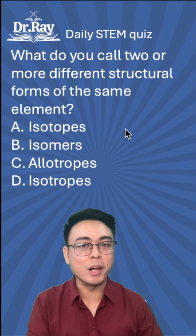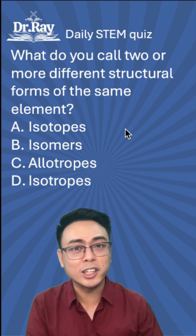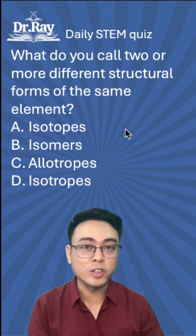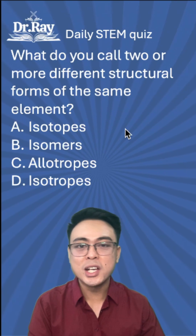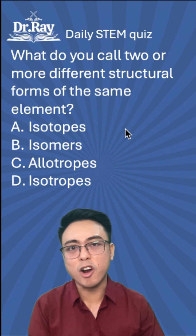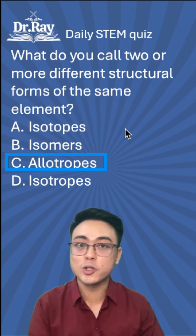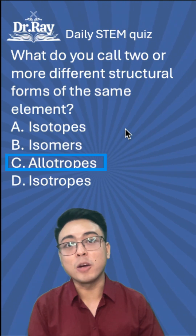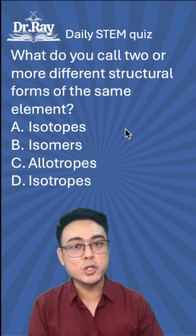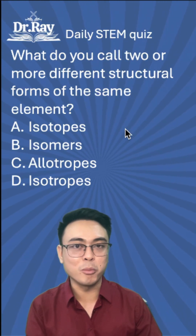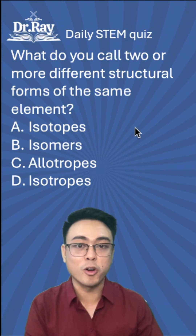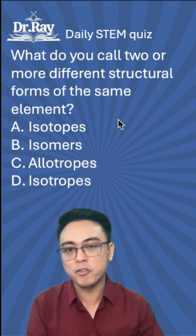Isotopes are the same element, but they have different nuclear properties — they have a different number of neutrons. An example of this is carbon-14 versus carbon-12. Both are carbon, but carbon-14 is the one used for radioactive carbon dating, while carbon-12 is the most abundant form of carbon.